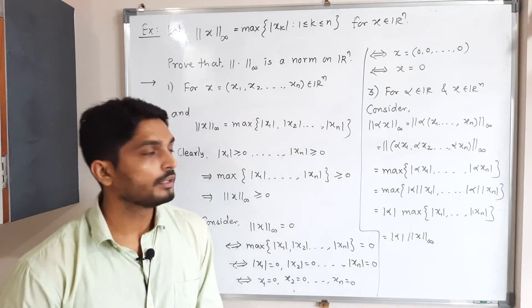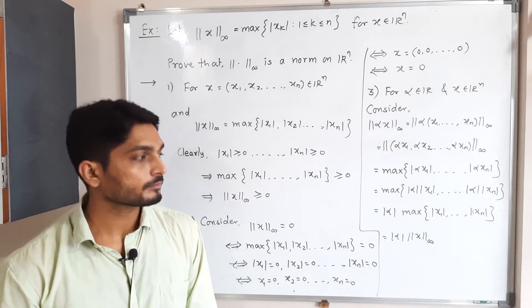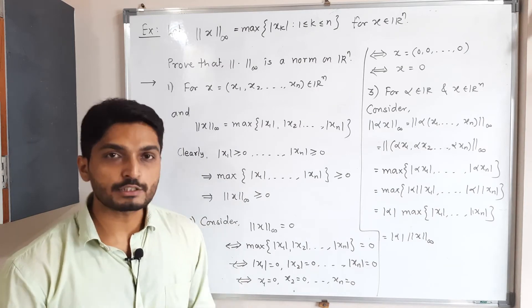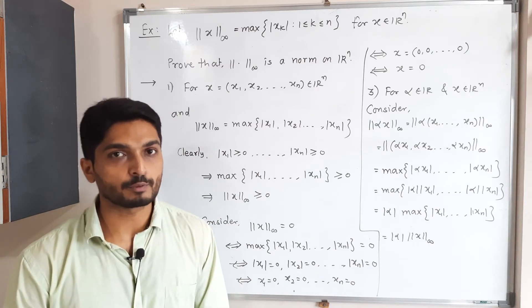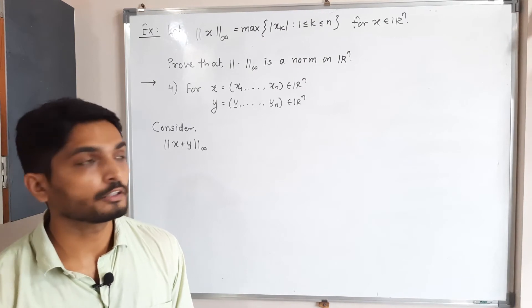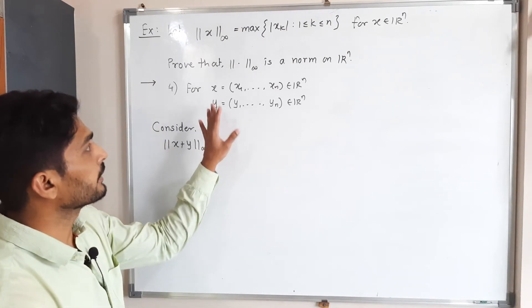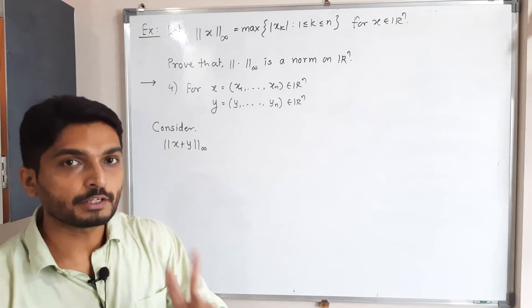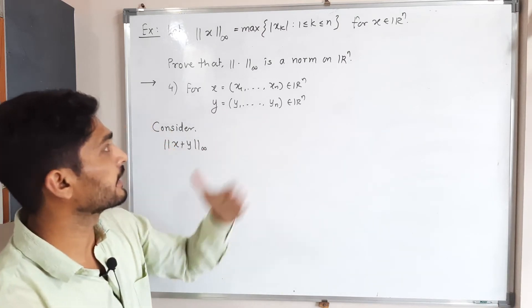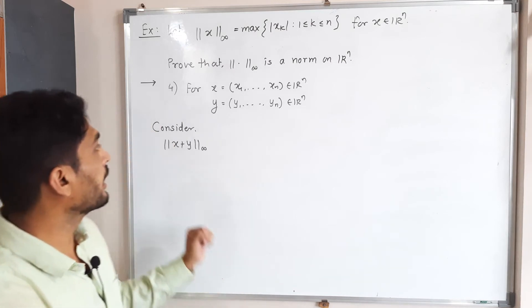We have proved the first three properties. Now we just have to prove the last property — the triangle inequality. Make a screenshot and then we will go for the last property.